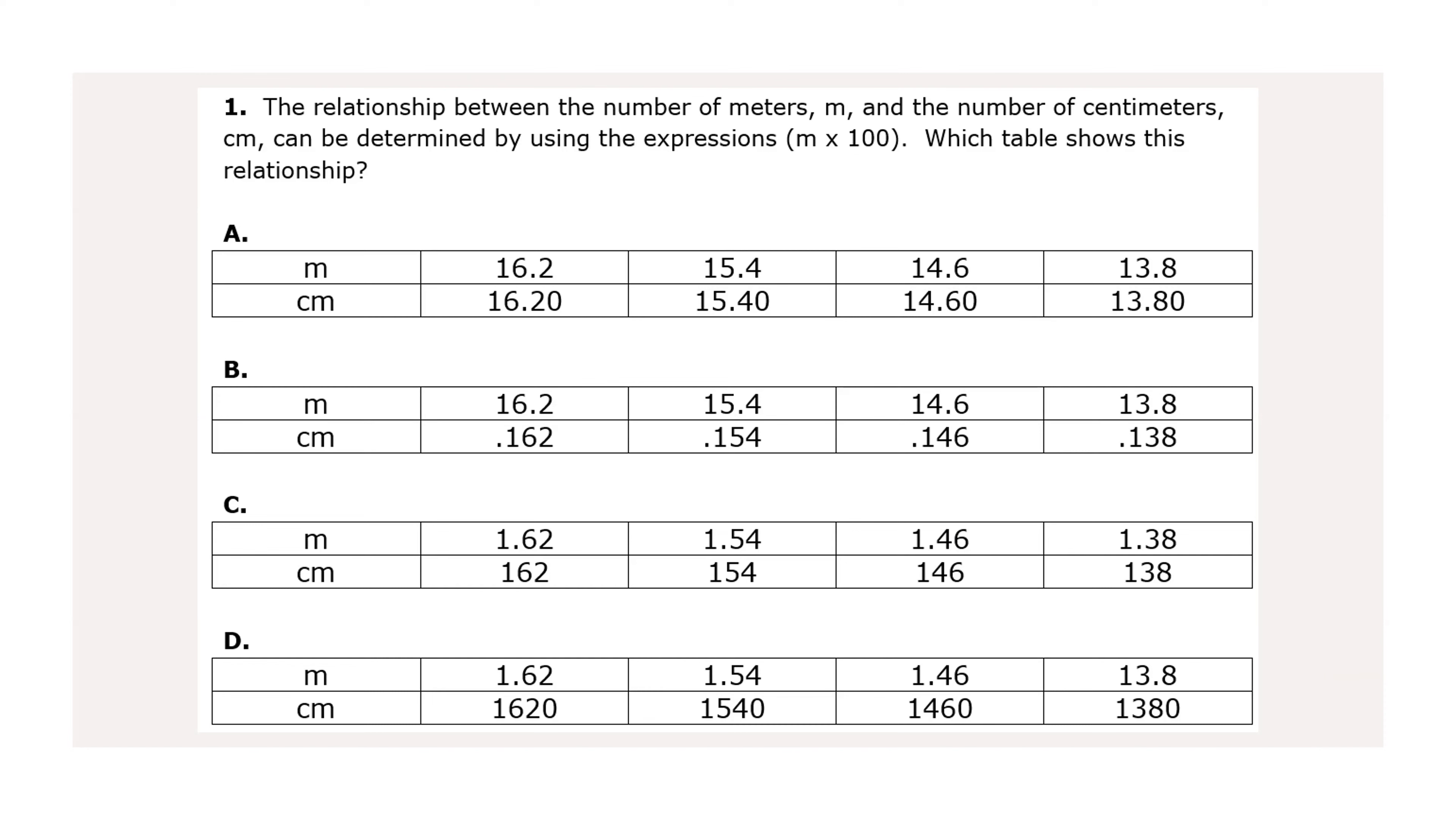The relationship between the number of meters, m, and the number of centimeters, cm, can be determined by using the expression m times 100, which table shows this relationship. Meters and centimeters.